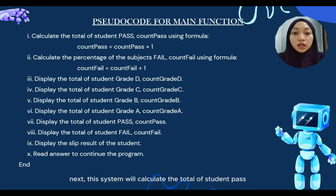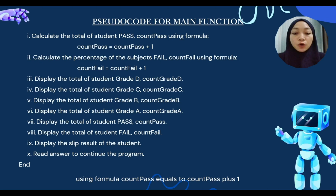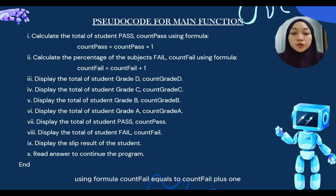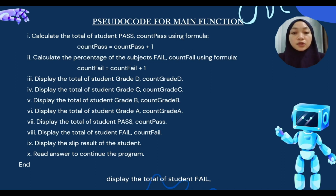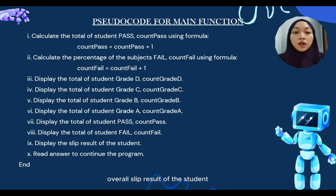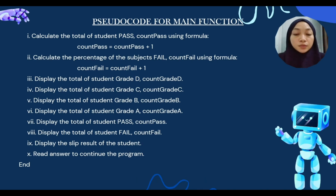Next, the system will calculate the total of student grades and percentage of subjects for pass or fail. Then it displays the total of student grade C, grade B, grade A, total of students who passed, total of students who failed, and the overall slip result of the student. The system then reads the answer whether users want to continue or stop the system.